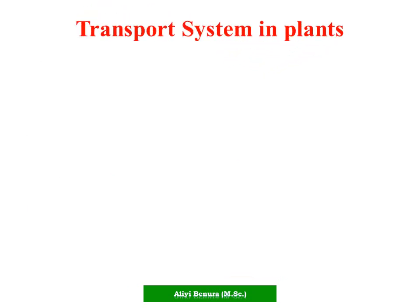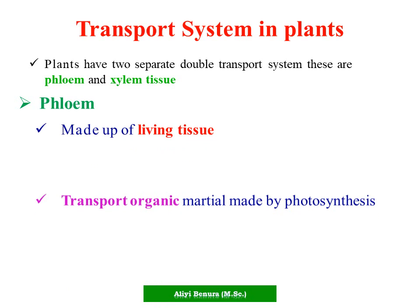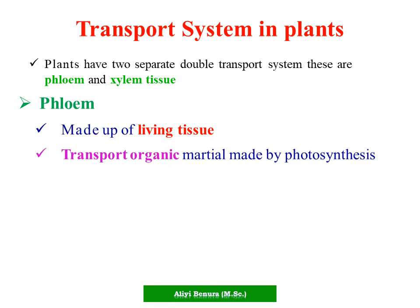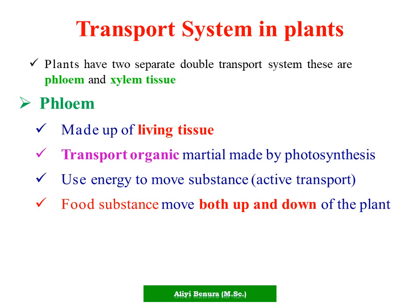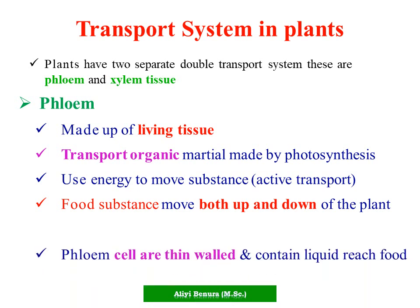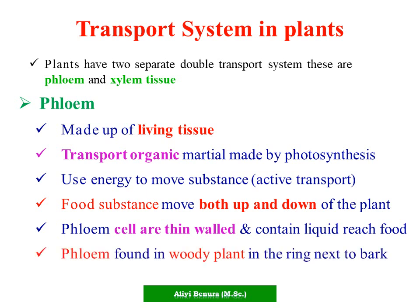Plants have two separate transport systems: phloem and xylem tissue. Phloem is made up of living tissue. It transports organic material made by photosynthesis. It uses energy to move substances, meaning by active transport. Food substances move both up and down the plant. Phloem cells are thin-walled and contain liquid rich in food. Phloem is found in woody plants in a ring next to the bark.